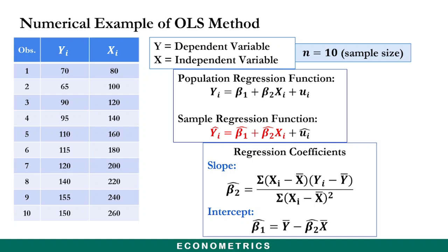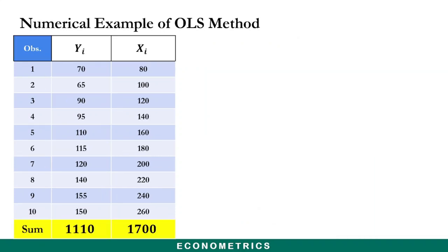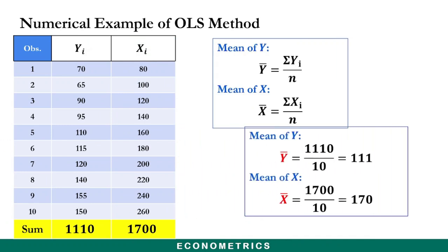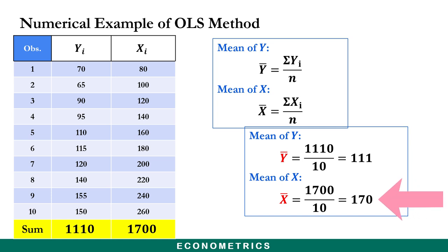We need to calculate the mean of x and mean of y, but first we have to sum the values of y and x. The sum of y values is 1110 and the sum of x values is 1700. We use these sum values and the formula shown on screen: substituting and dividing by the sample size of 10, we get the mean of y to be 111 and the mean of x to be 170.